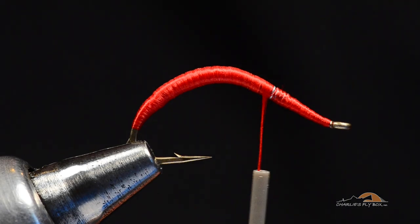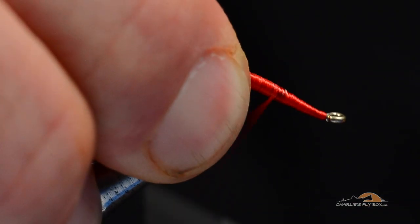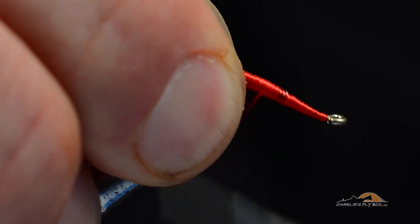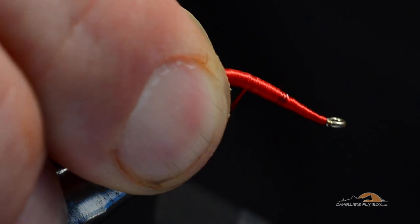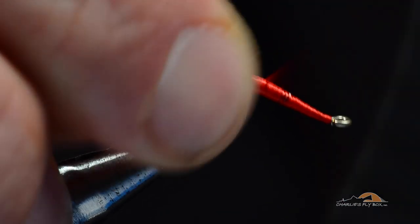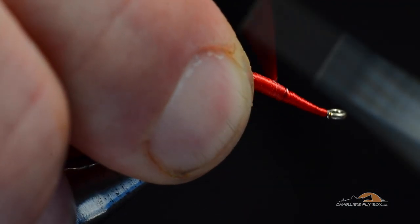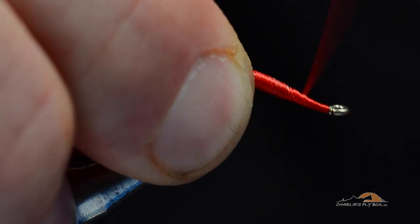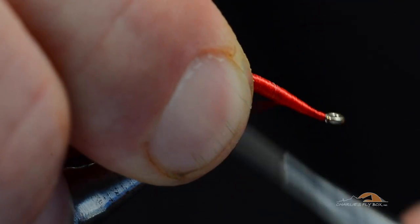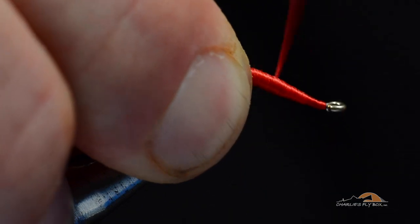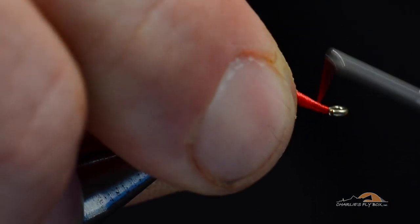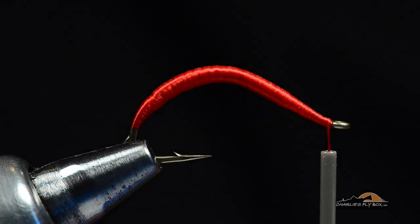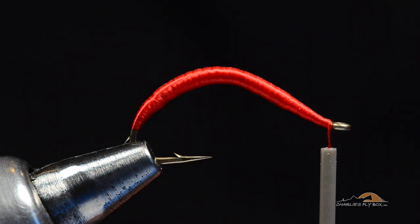Now as I work up toward the front here, I'm going to keep this thread as flat as I can, but I want to make sure that I cover all the lead wraps underneath and sort of maintain that taper. As I get to this step, I want to kind of work up and down that thread dam. You can see how I cover that last wrap of lead. Then I'm going to come up just behind the eye. So you've got a nice smooth thread body there.